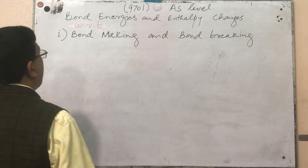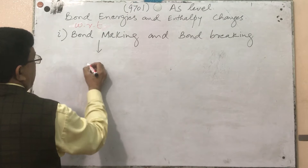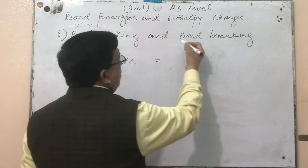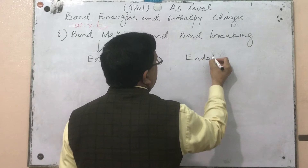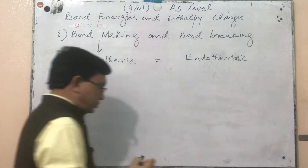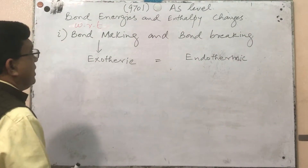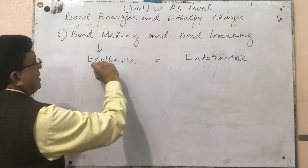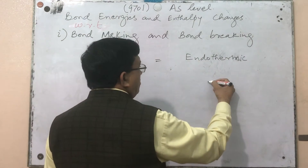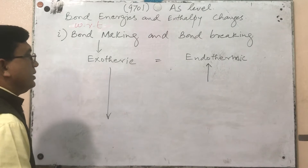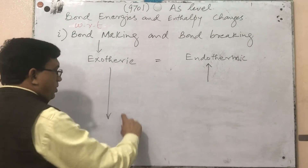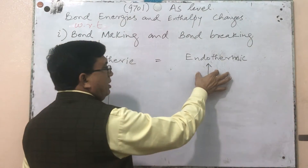Bond making is always exothermic and bond breaking is always endothermic. If a large amount of energy is released during bond making and only a small amount of energy is absorbed during bond breaking, the overall process is exothermic.